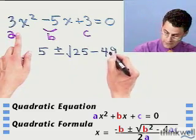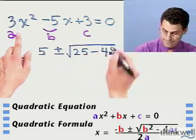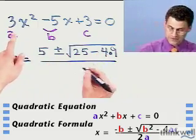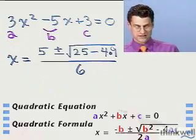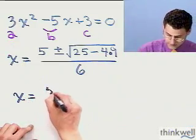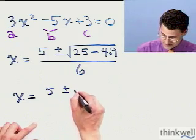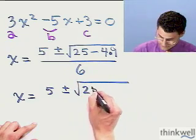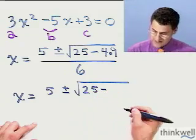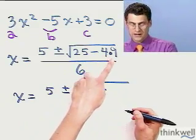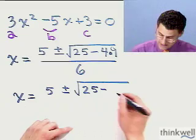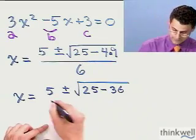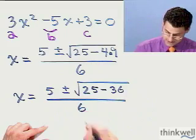Minus 4 times ac. Now what's ac? Well, a is 3 and c is 3, so this times that is just 9. So 4 times 9. That's not 49, it's 4 times 9. All over the whole thing over 2a. So 2 times 3 is 6. So there's the answer. Let's see if we can actually work that out a little bit. x equals 5 plus or minus the square root of 25 minus, and what is 4 times 9? Well, that is 36 divided by 6.